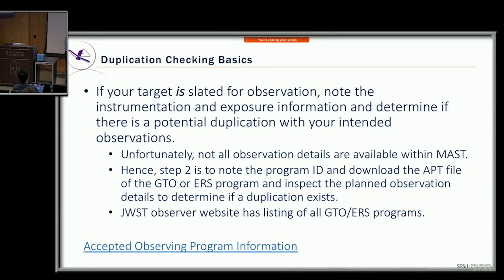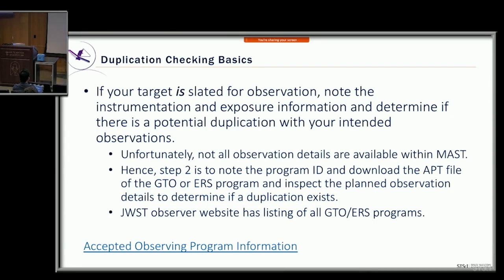If you find a potential duplication, MAST will tell you which instrument and mode, but not the details of the exposures. You then take the program ID, go to the APT retrieval tool, and it sends you right to the APT file — you can download it from within APT as well. You literally have to open it up and decide whether you're trying to do something they were proposing to do. If you have to go that far, it is cumbersome — we apologize — but that's just the way it is for this first cycle.